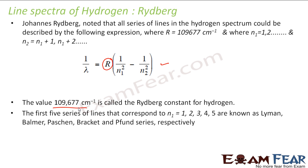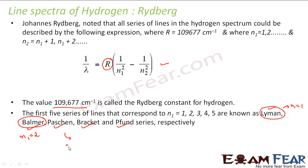The first five series of lines corresponding to N1 equal to 1, 2, 3, 4, and 5 are known as Lyman, Balmer, Paschen, Brackett, and Pfund. Balmer corresponds to N1 equal to 2, meaning all atoms from higher energy levels fall back to n equal to 2. For Lyman, N1 is equal to 1. For Paschen, N1 is equal to 3. For Brackett, N1 is equal to 4, and for Pfund, N1 is equal to 5.